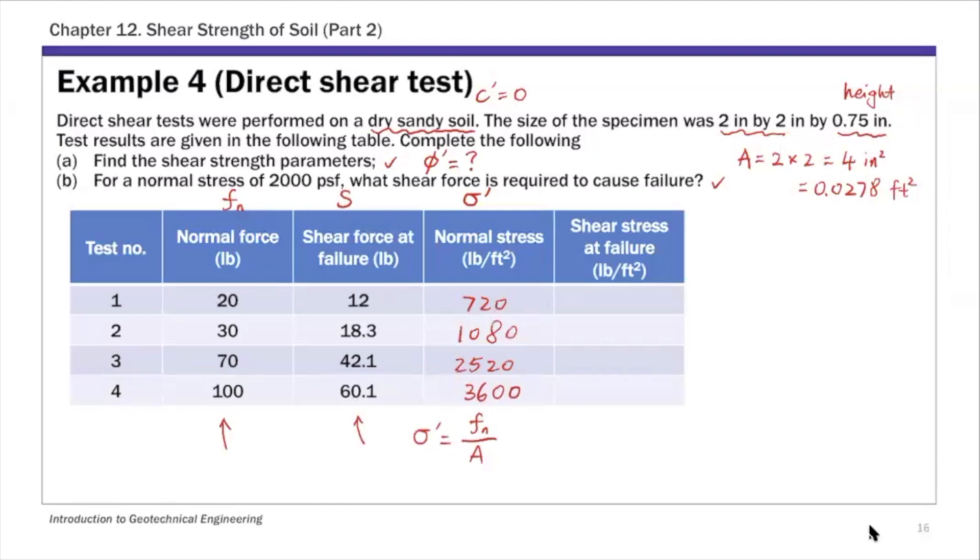The shear stress at failure we call tau f, and tau f is the shear force at failure divided by A. Let's call this Sf for failure. If you use shear force at failure and divide by A, this is shear stress. That's the normal stress and shear stress at failure.